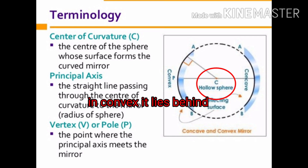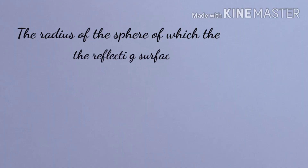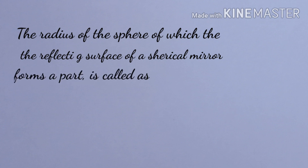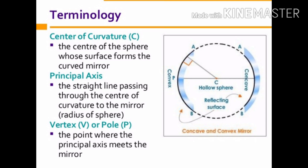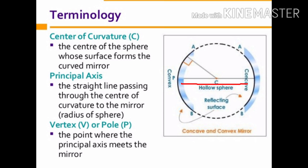The center of curvature of a concave mirror lies in front of it; however, it lies behind the mirror in case of a convex mirror. The radius of the sphere of which the reflecting surface forms a part is called the radius of curvature, represented by the letter R. The distance PC is equal to the radius of curvature. A straight line passing through the pole and the center of curvature is called the principal axis, which is normal to the mirror at its pole.